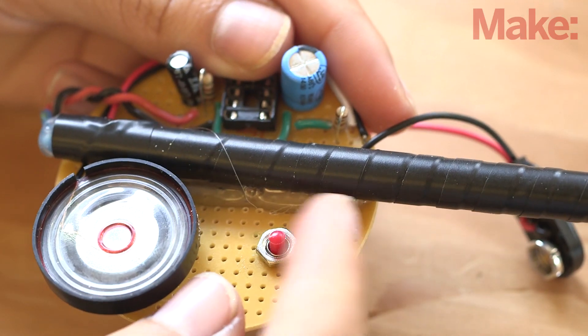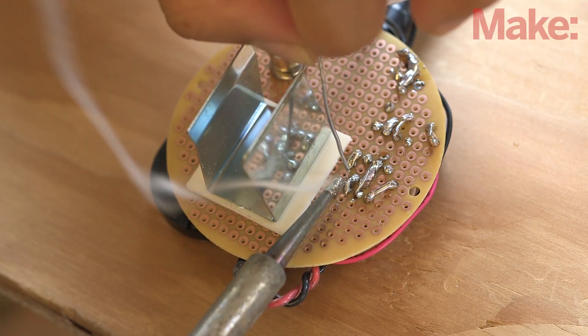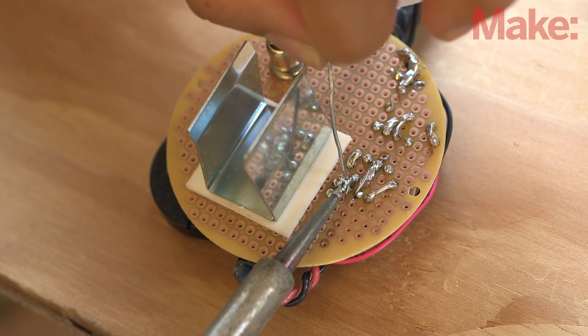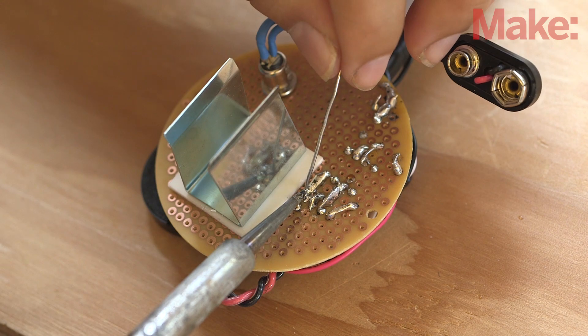Install the switch and solder one of the pins to the battery terminal's positive lead. Solder the other lead of the switch to the PCB on the opposite side of the light tube. Solder the battery's negative lead to ground.